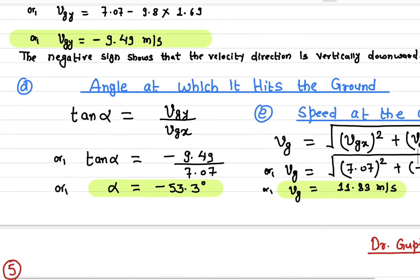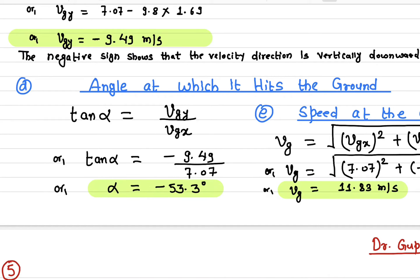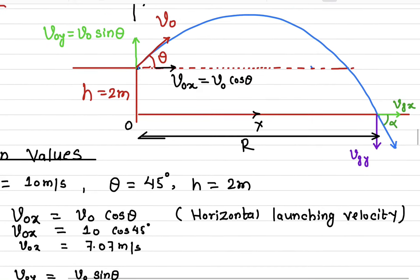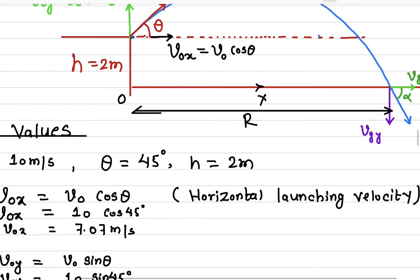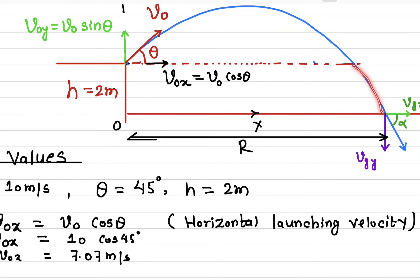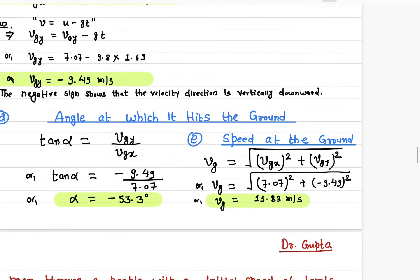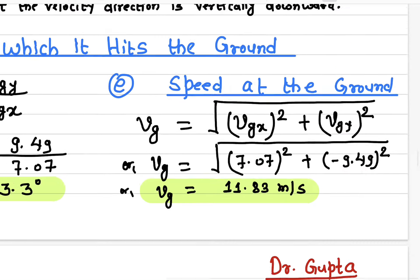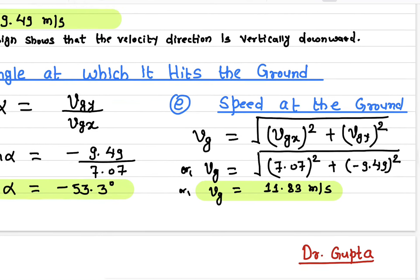Solving gives alpha = −53.3°. The negative sign makes sense because the velocity is directed downward. The magnitude, 53.3°, is greater than 45°, which also makes sense: the vertical velocity is increasing while the horizontal velocity stays constant, so the projectile becomes more and more vertically oriented. The total speed at impact is found using the Pythagorean theorem: √(vgx² + vgy²) = √(7.07² + 9.49²) = 11.83 m/s.